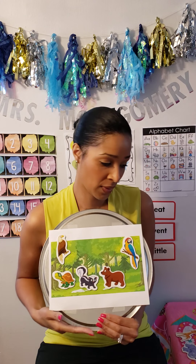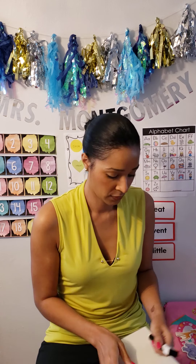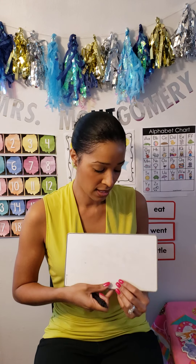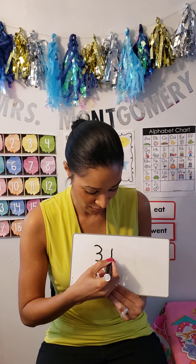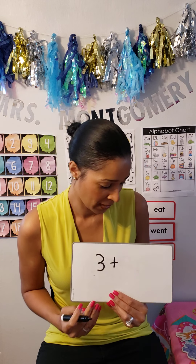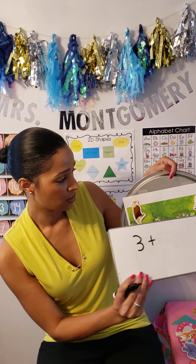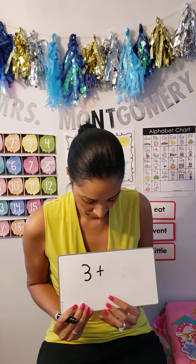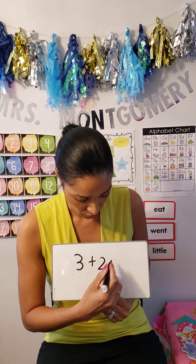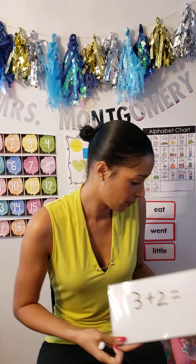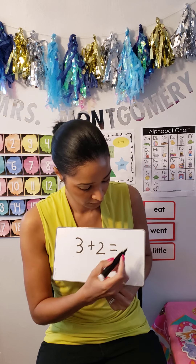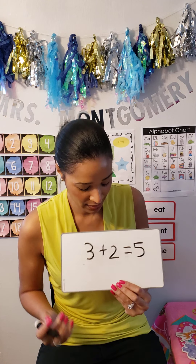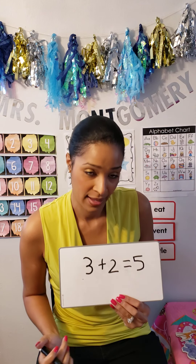Let's write an equation. We had three animals in the forest — the turtle, the skunk, and the bear — and more animals came. So we're going to put a plus sign. Plus means more. How many more came? Two more came. So three plus two equals — let's see: one, two, three, four, five. Three plus two equals five.